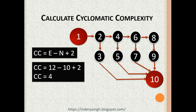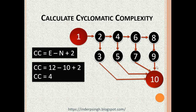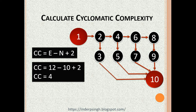Since the formula is E minus N plus 2, we count the total number of edges in the control flow graph: 1, 2, 3, 4, 5, 6, 7, 8, 9, 10, 11, and 12 — so there are 12 edges, replacing E with 12. N is the number of nodes, which is 10. So 12 minus 10 plus 2 gives us 4. Cyclomatic complexity is 4, meaning we need a minimum of 4 tests to test this algorithm.